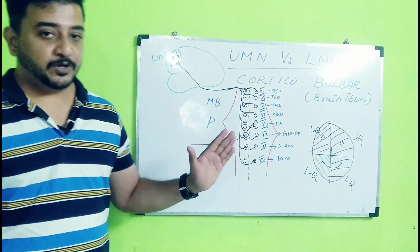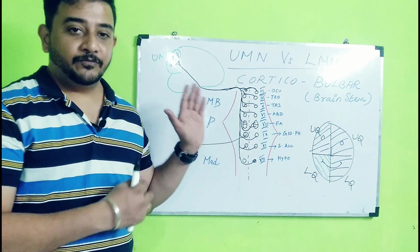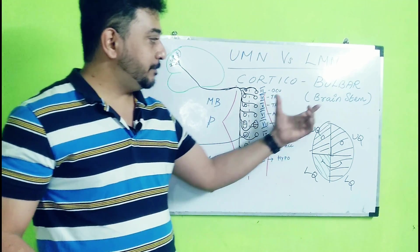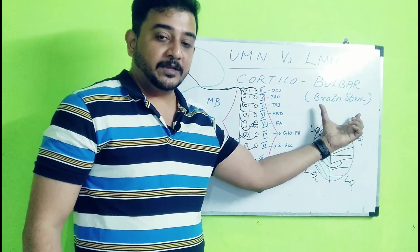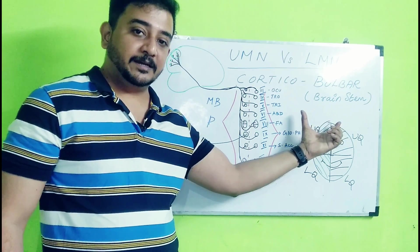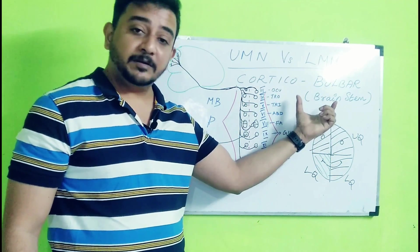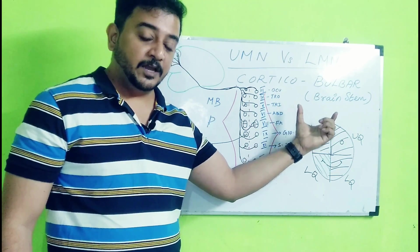So upper motor neuron and lower motor neuron for the corticobulbar tract is clear with this. So when I say bulbar, that means the brainstem. There is a lot of interchangeable thoughts on this, but let me clarify. Bulbar means the brainstem.